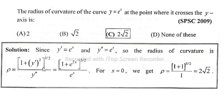The formula is: 1 plus y prime squared, whole to the power 3 over 2, divided by y double prime. This equals 1 plus e to the power x squared, which means e to the power 2x, whole to the power 3 over 2, divided by y double prime equals e to the power x. For the y-axis, x equals 0.